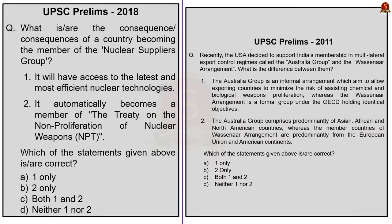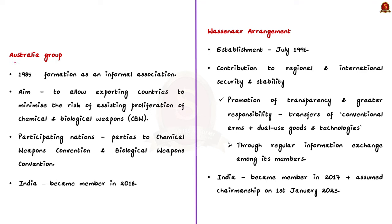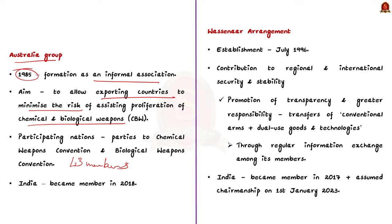Two previous year questions about Australia group, Wassenaar agreement, and NSG were asked in UPSC exams of 2011 prelims and 2018 prelims respectively. In the news also we are frequently hearing about multilateral export control regimes, so it is very important to know about these regimes from the prelims perspective. The Australia group is an informal association formed in 1985. It aims to allow exporting countries to minimize the risk of assisting the proliferation of chemical and biological weapons. The Australia group consists of 43 participating nations, all parties to the Chemical Weapon Convention and the Biological Weapon Convention. India became a member in 2018.